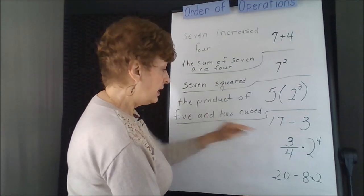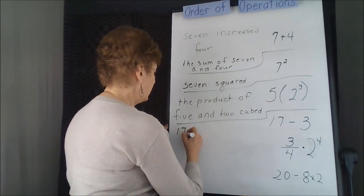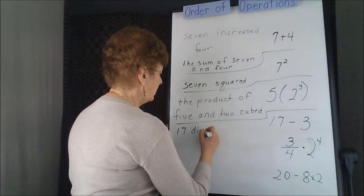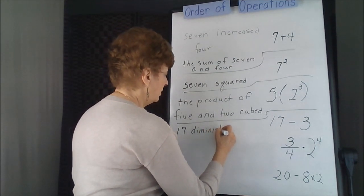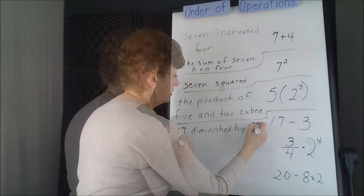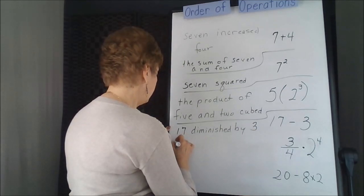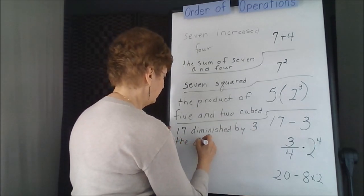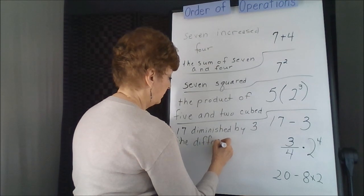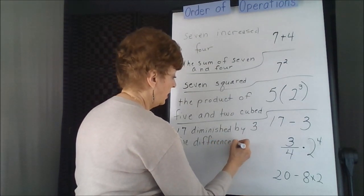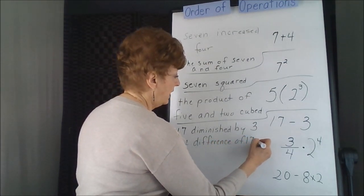You could say 17 diminished by 3, or the difference of 17 and 3.